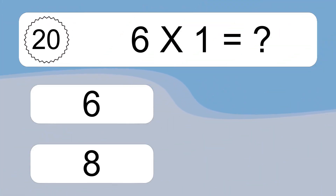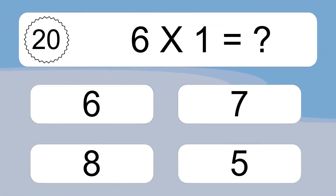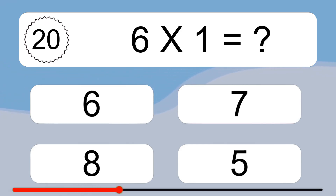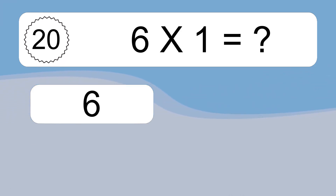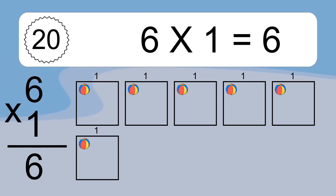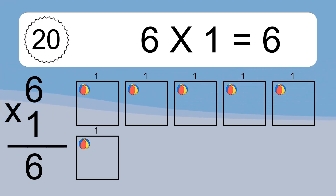6 times 1 equals what? 6 times 1 equals 6. We have 6 boxes, and each box has 1 colorful ball inside. If you count all the balls in all the boxes together, you will have 6 times 1 balls. This equals 6 balls.